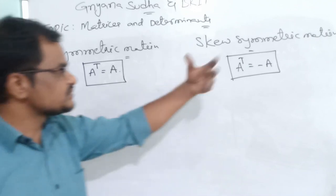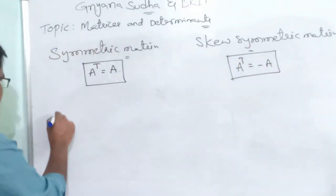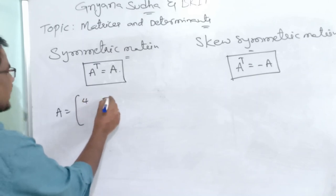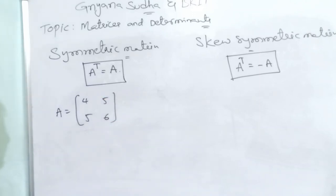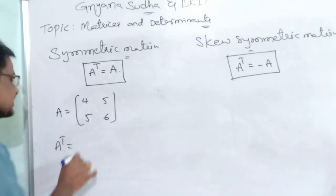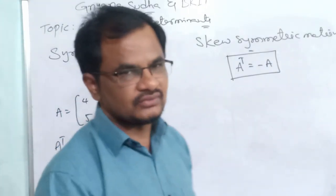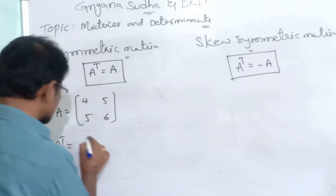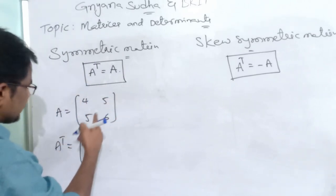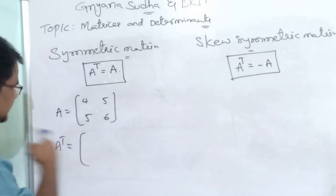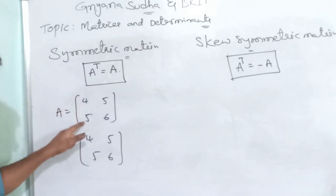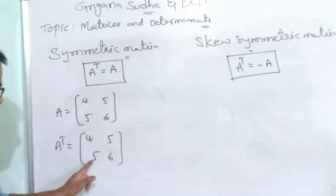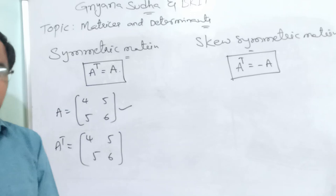Example of symmetric matrix: A = [[4,5],[5,6]]. Taking A transpose by interchanging rows and columns gives [[4,5],[5,6]], which equals A. So A^T = A, confirming this is a symmetric matrix.